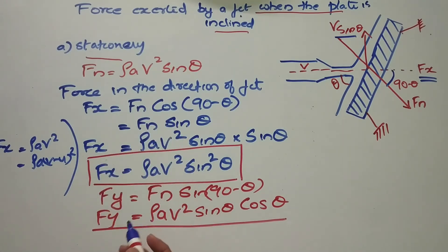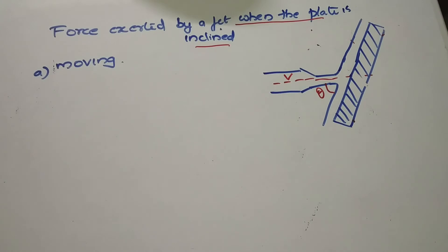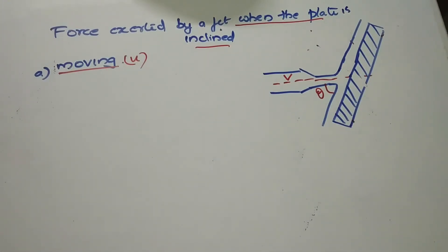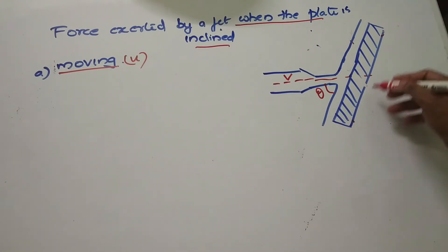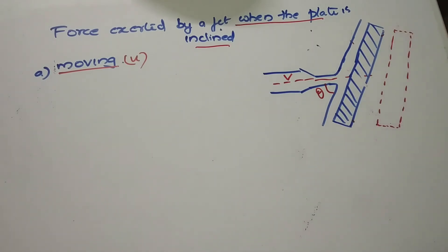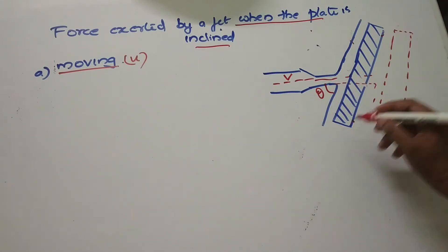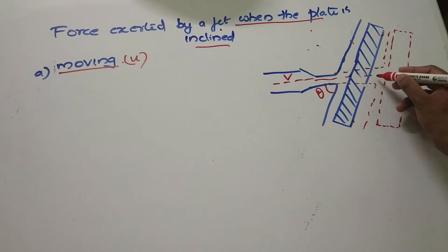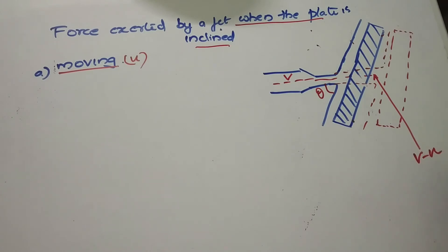Now the second case: the plate is moving with a velocity U. The plate moves and takes a new position. In this case, the relative velocity becomes V minus U.